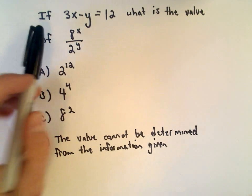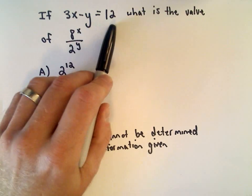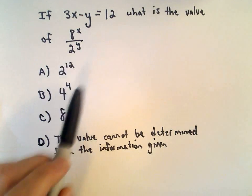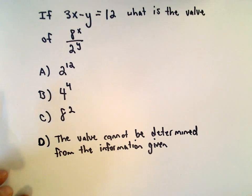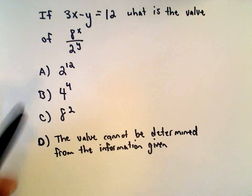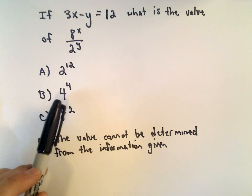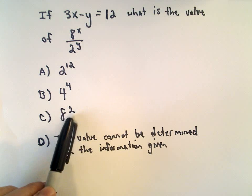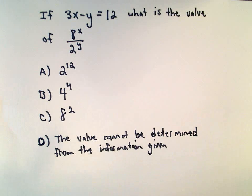In this question we're given: if 3x minus y equals 12, we want to know what's the value of 8 raised to the power of x divided by 2 raised to the power of y. The answer choices are: 2 raised to the power of 12, 4 raised to the power of 4, 8 raised to the power of 2, or part D, the value cannot be determined from the given information.